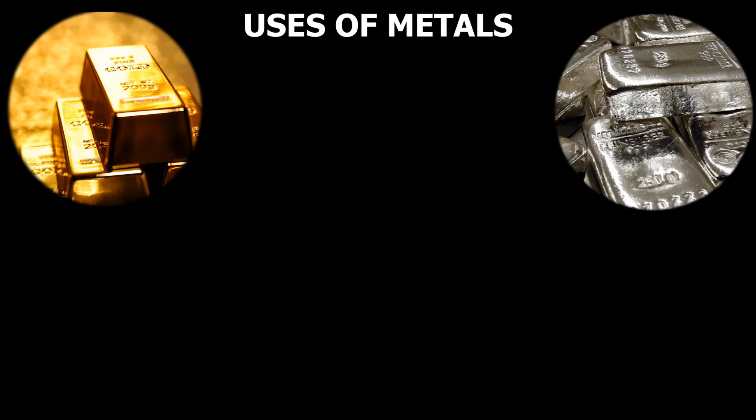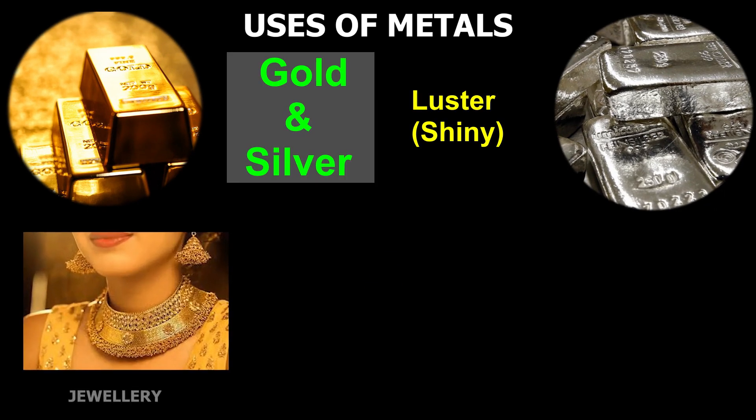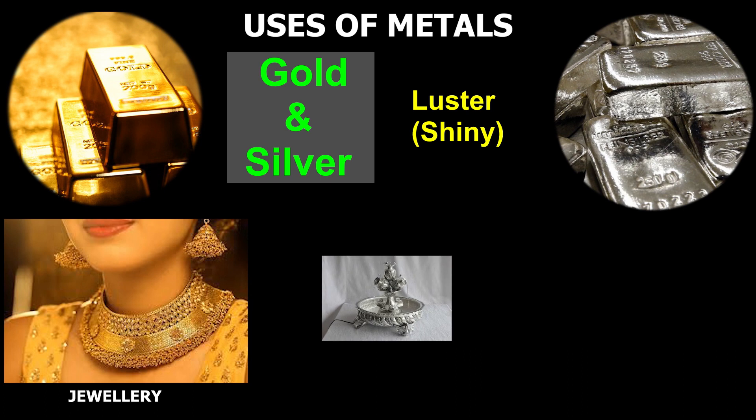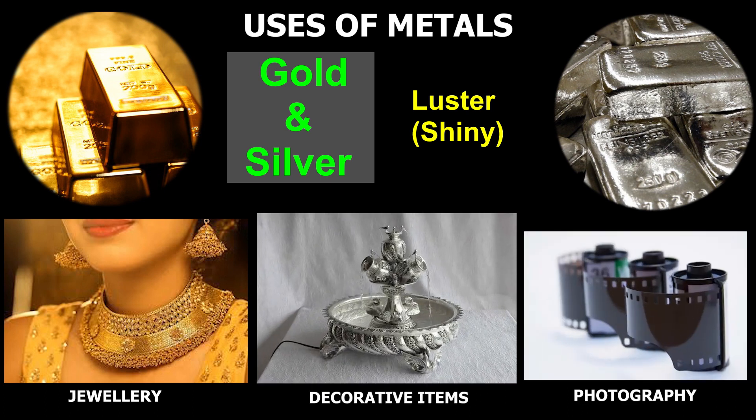Silver and gold are lustrous metals and thus used in making jewelry, decorative items, and photography.